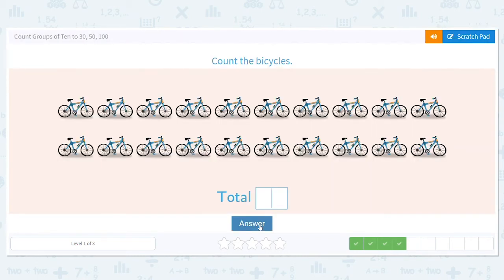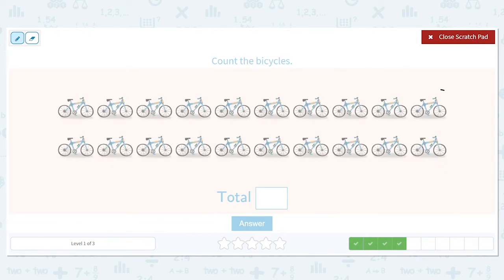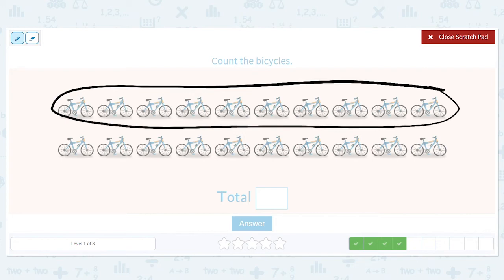We have another set of bicycles. Let's check it out. We know that the top row should have 10. 1, 2, 3, 4, 5, 6, 7, 8, 9, 10. What do we do to it? Circle that row. Do I have another row of 10 below it? I do. So I need to circle that too.